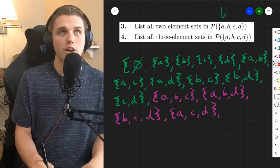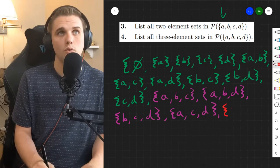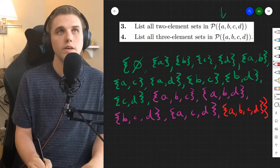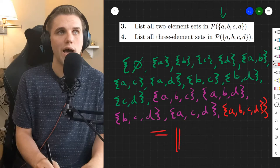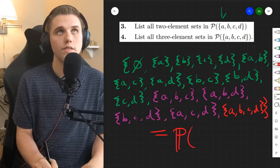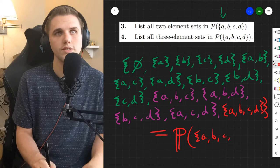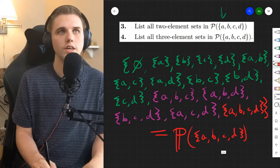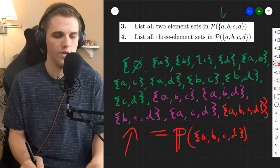And then last but not least in our power set we have a set of size four which is {a, b, c, d}. So this is the power set of the set containing {a, b, c, d}. The power set of this is this set right here.